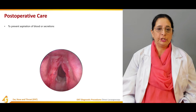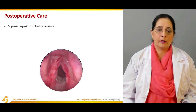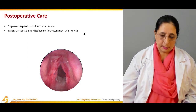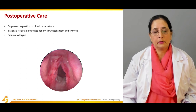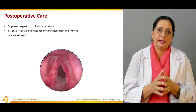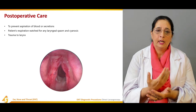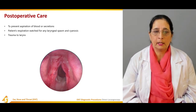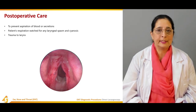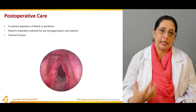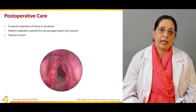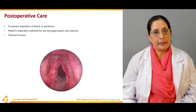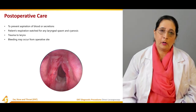Post-operative care: to prevent aspiration of blood or secretions, the patient's respirations are monitored for any laryngeal spasm and cyanosis, and for trauma to the larynx. Patient respiration should be carefully monitored; cyanosis or bluish discoloration of the skin can occur due to lack of oxygen supply as a result of respiratory abnormalities. Bleeding may also occur from the operative site.